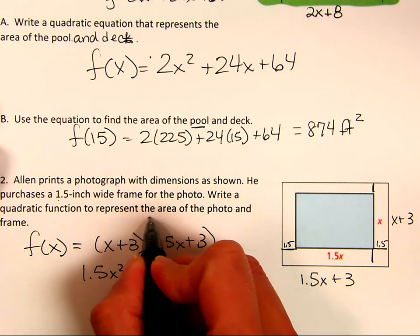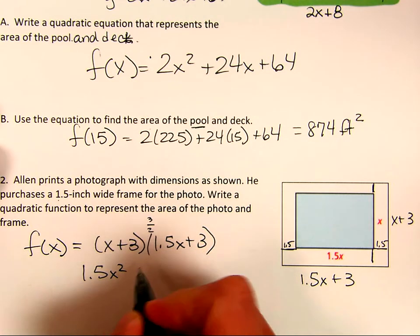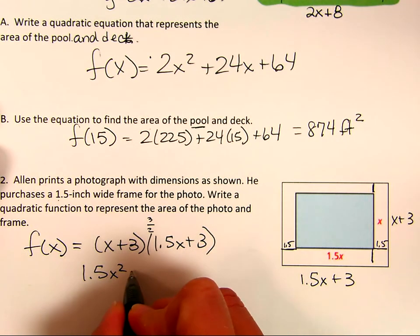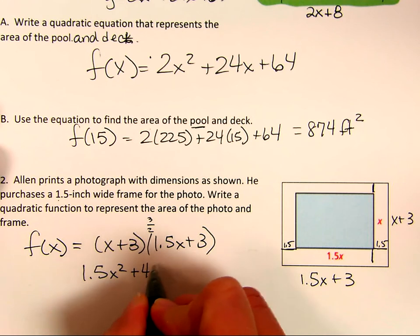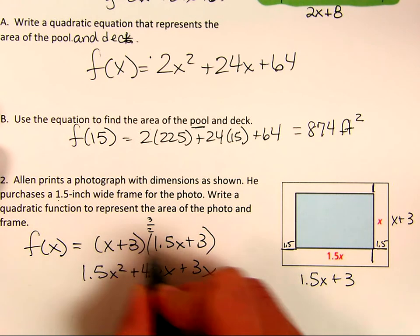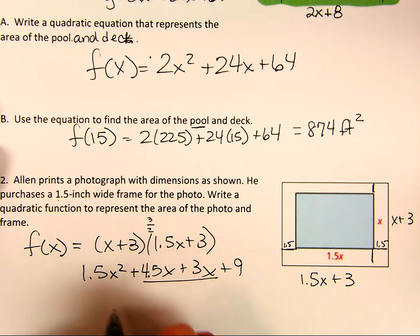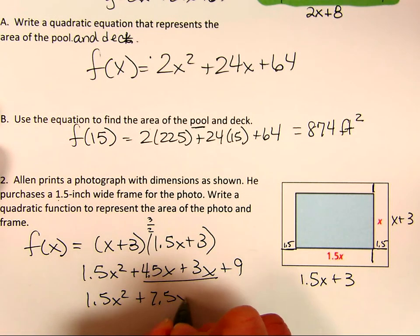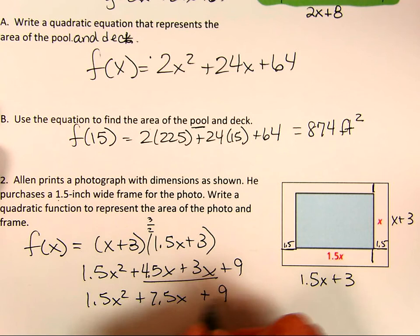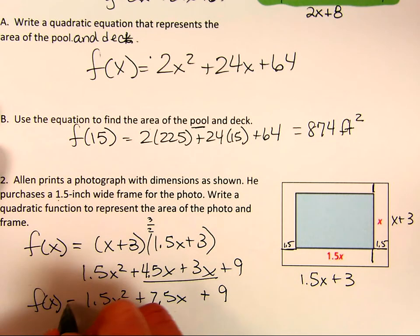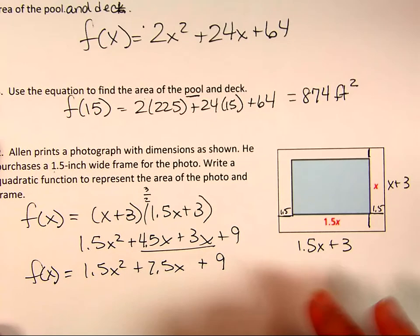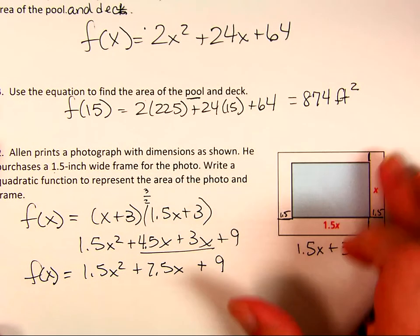1.5 times 3. So I like to do 3 halves. So that gets me 9 halves, which is 4.5. 4.5x and then plus 3x and then plus 9. I can combine these right here. 1.5x squared plus 7.5x plus 9. And this is my quadratic equation that models the area of the picture and the frame.